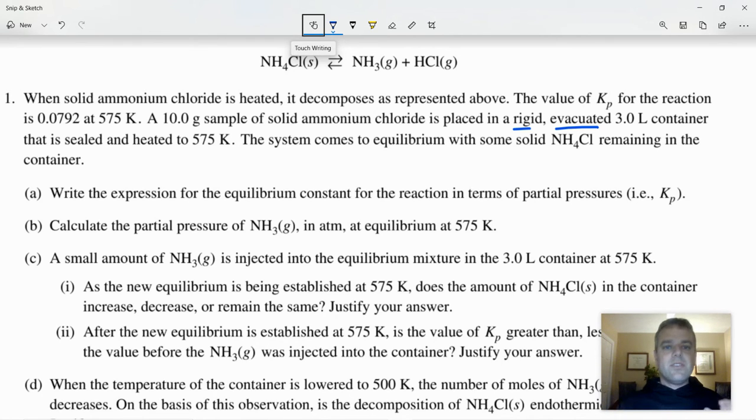I do want to point out real quick that when we refer to a rigid evacuated container, what that means is it's a container that its volume is fixed, and when we say it's evacuated, that means that there is nothing in it. All the air has been pumped out. So we've drawn a vacuum on the container and just added the 10 grams of ammonium chloride. The system comes to equilibrium with some solid ammonium chloride remaining. That's important because if all the ammonium chloride had turned into a gas, then we're not really at equilibrium. That means that this reaction made all the products and there's not an equilibrium position.